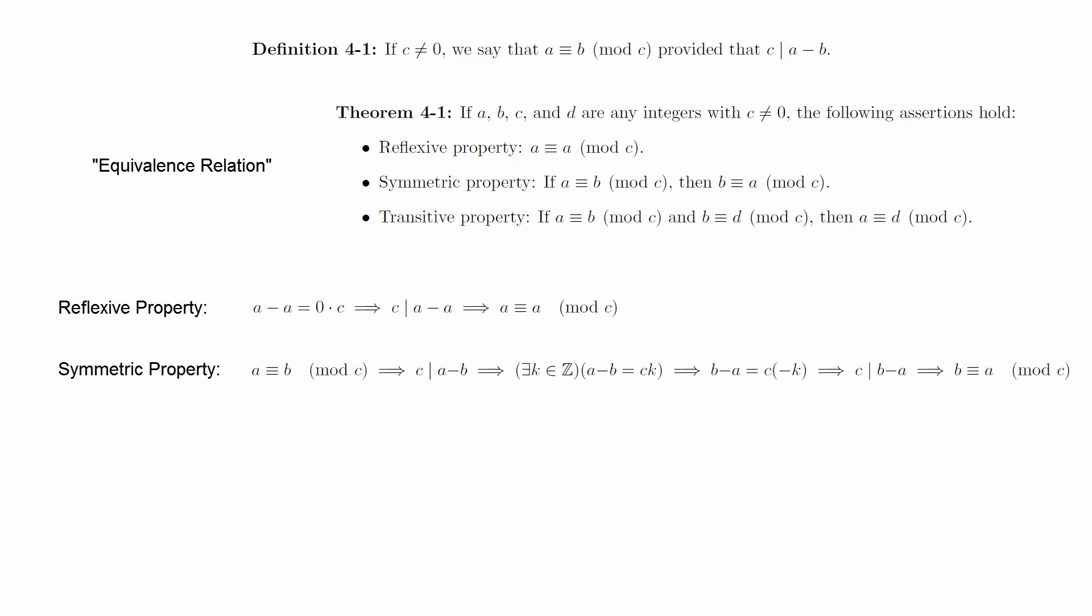To prove the symmetric property, we simply write out what it means for a to be congruent to b mod c, and rewrite the equation to make it match the definition.